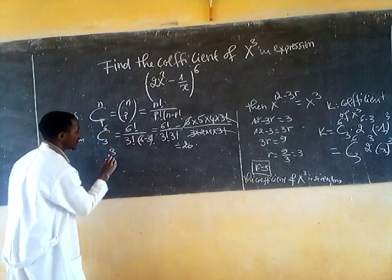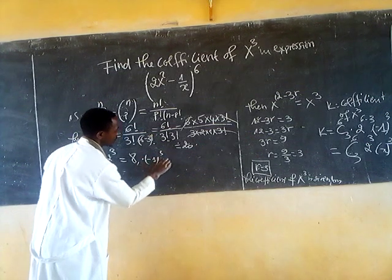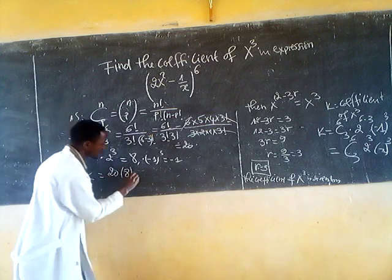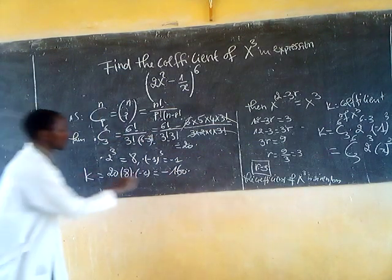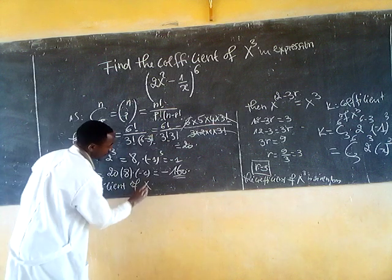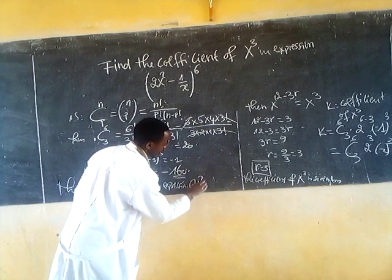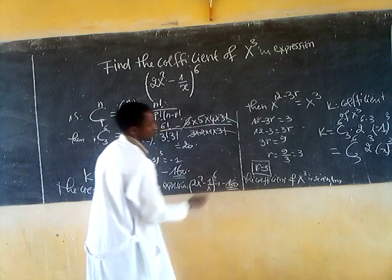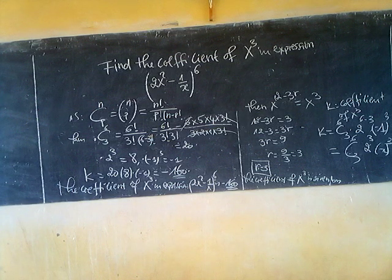So 2 power 3 equals 8, and (-1) power 3 equals minus 1. The coefficient is 20 times 8 times (-1), which equals minus 160. So the coefficient of x power 3 in the expression (2x² - 1/x)^6 is minus 160. Thanks for watching, remember to subscribe, and we'll see you in the next video.